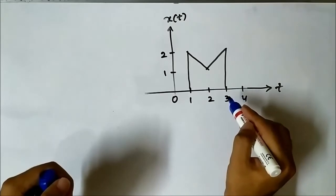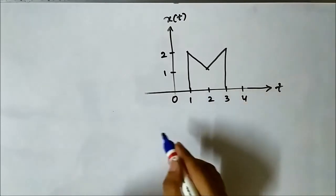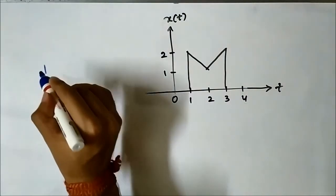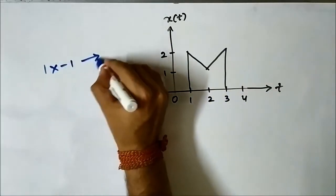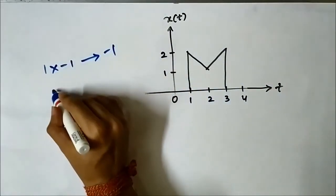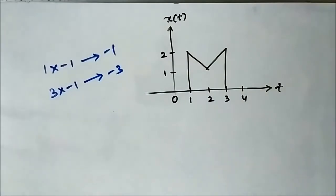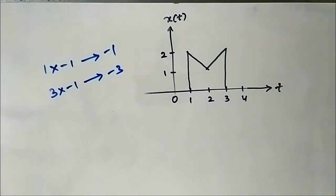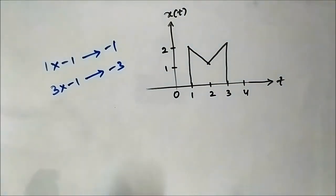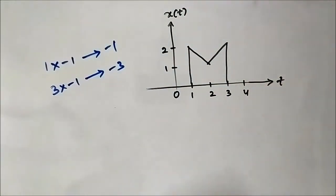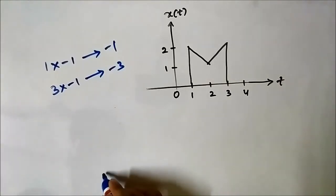For the time reversal, we pick the starting point and multiply it by minus 1, and we pick the ending point and also multiply it by minus 1. These are the new starting and ending points. The time-reversed signal will just be the mirror image along the vertical axis — the amplitude axis — and it will look like this.